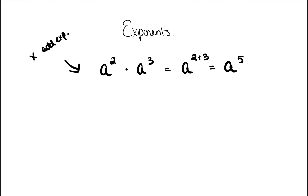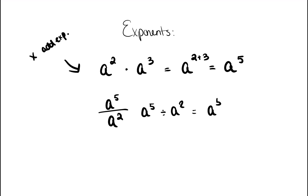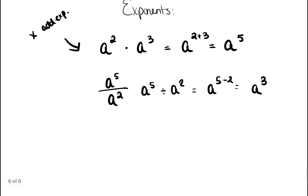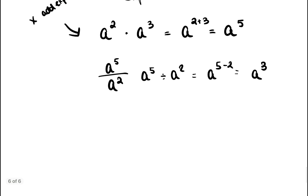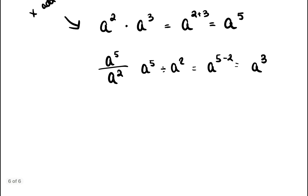The next rule is when you're dividing. Say I have a to the fifth power over a squared — this is a division problem, the same as a to the fifth power divided by a squared. When you're dividing, you subtract the exponents, so it'd be five minus two, leaving you with a to the third power.